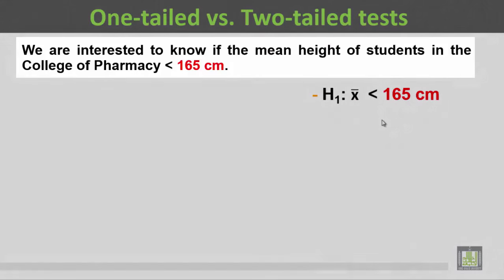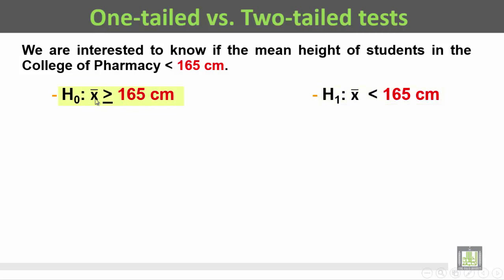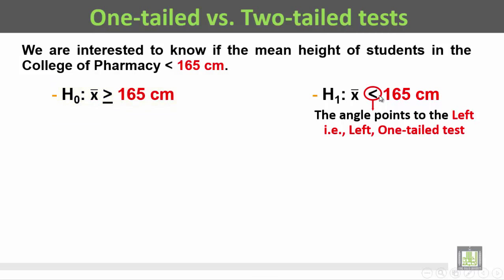We are interested to know if the mean height of students in the College of Pharmacy is less than 165 centimeters. This is the research point, so we write the alternate hypothesis: H1 is X̄ < 165 centimeters, and H0 is that X̄ is greater than or equal to 165 centimeters.